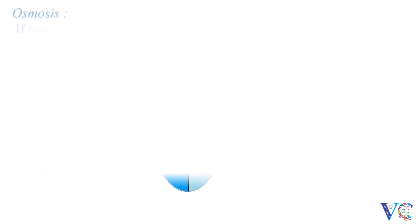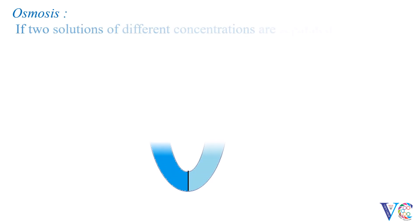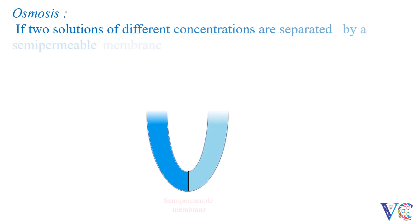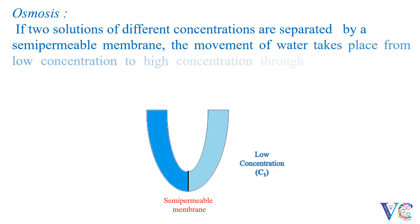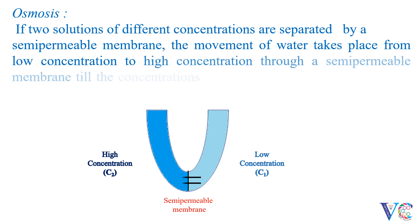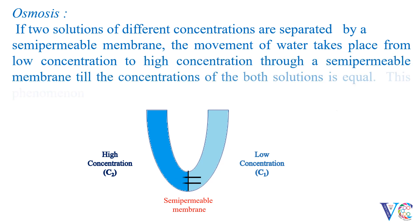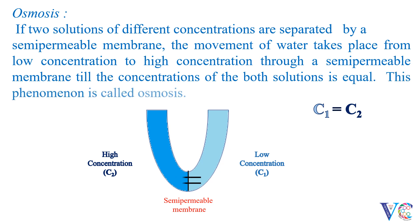Osmosis: if two solutions of different concentrations are separated by a semi-permeable membrane, the movement of water takes place from low concentration to high concentration through the semi-permeable membrane, till the concentrations of both solutions are equal. This phenomenon is called osmosis.